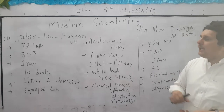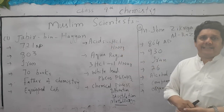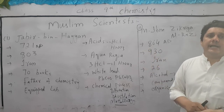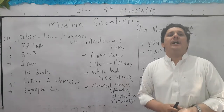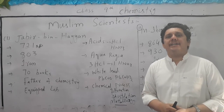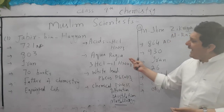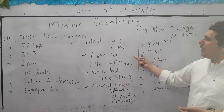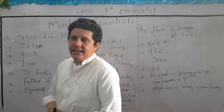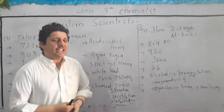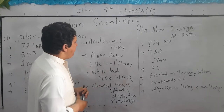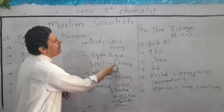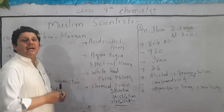He prepared many acids, for example hydrochloric acid and nitric acid. He also prepared aqua regia. What is aqua regia? A mixture containing three parts of hydrochloric acid and one part of nitric acid is called aqua regia.